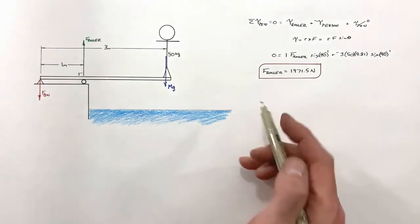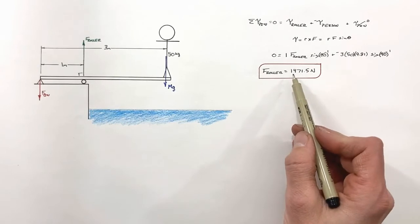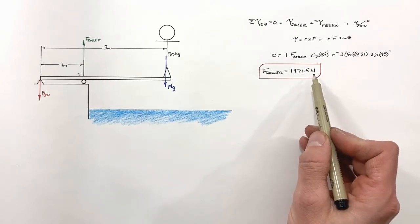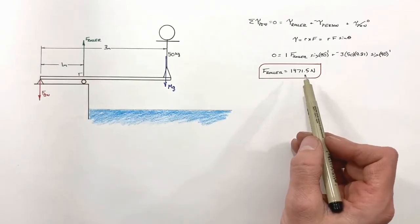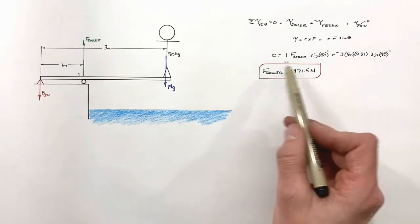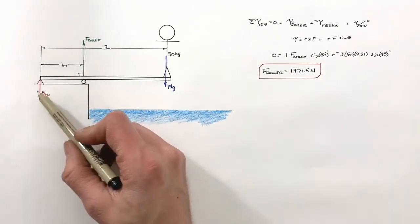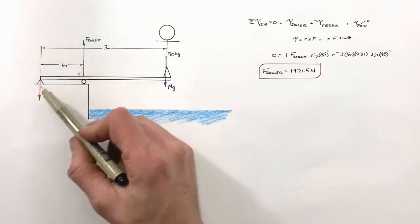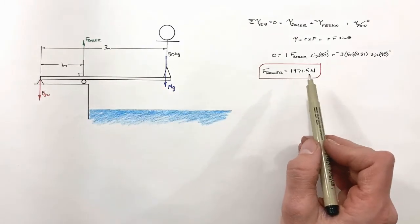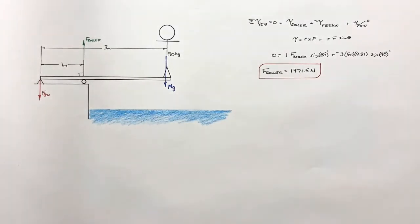This roller force has a certain magnitude and we need to determine whether it acts upward or downward. We've guessed it acts upward, and we'll confirm that shortly.